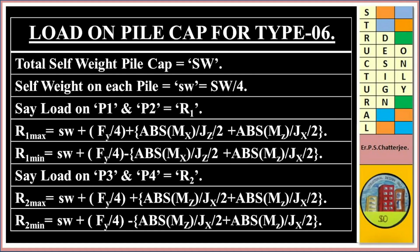R2 Max is equal to SW plus Fy divided by 4, plus absolute Mx divided by Jz divided by 2. R2 Min is equal to SW plus Fy divided by 4, minus absolute Mz divided by Jz divided by 2.